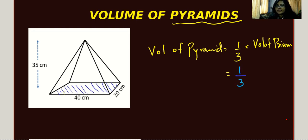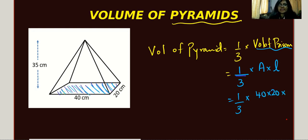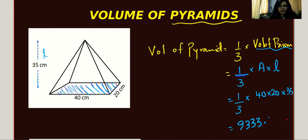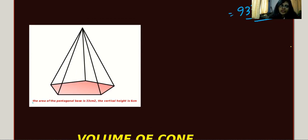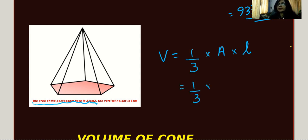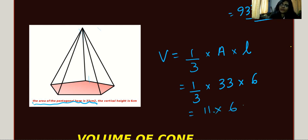For the first pyramid example, the base is a rectangle of 40 times 20, and the vertical height is 35. Volume equals one third times area of base times height, so one third times 40 times 20 times 35, giving 9,333.33 cm³. For the next pyramid — a pentagonal pyramid — the area of the pentagon base is already given as 33 cm², and the vertical height is 6. Volume equals one third times 33 times 6, which is 11 times 6, giving 66 cm³.